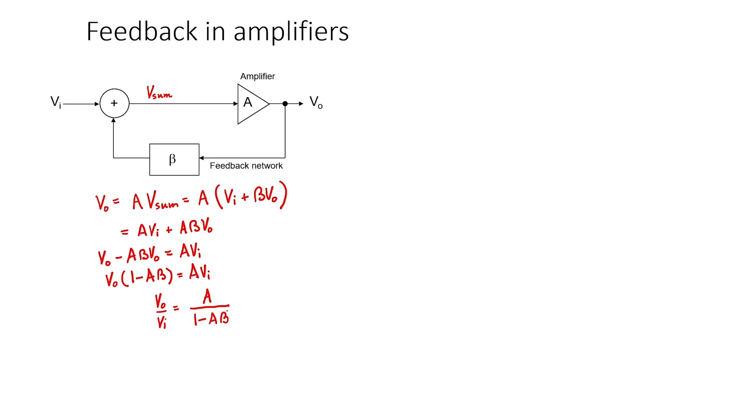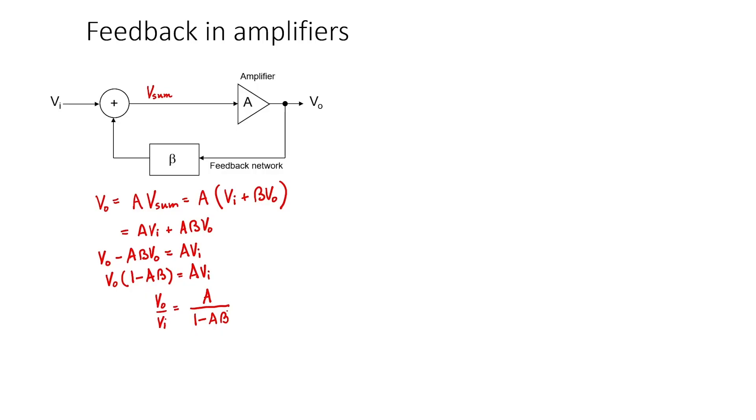In most filters, the quantity AB beta would be negative, so this term in the denominator would actually be greater than 1, reducing the gain of the circuit. This is unlike the situation in an oscillator where the feedback is typically positive and AB beta would be exactly equal to 1.